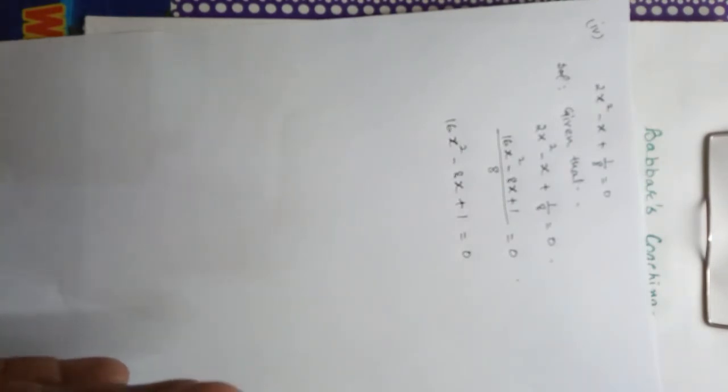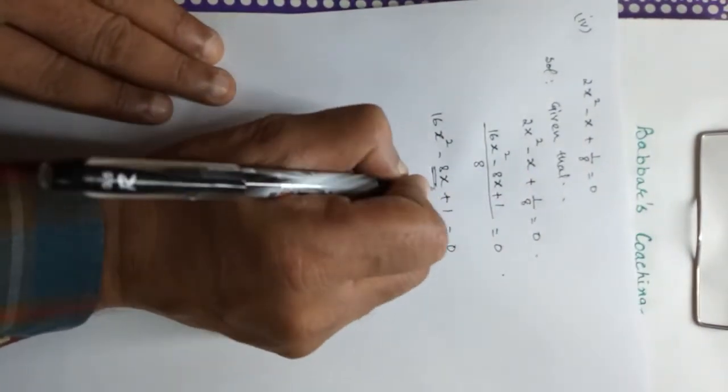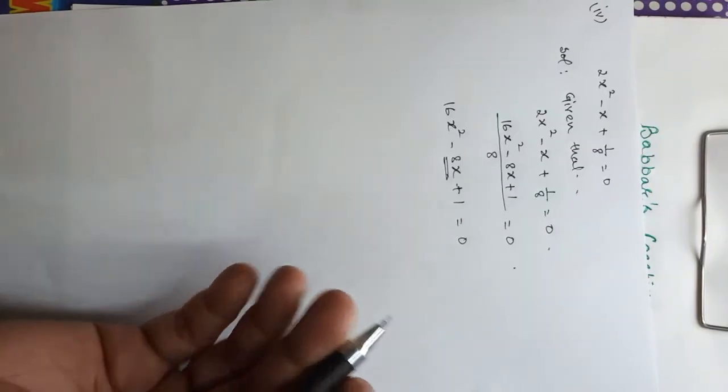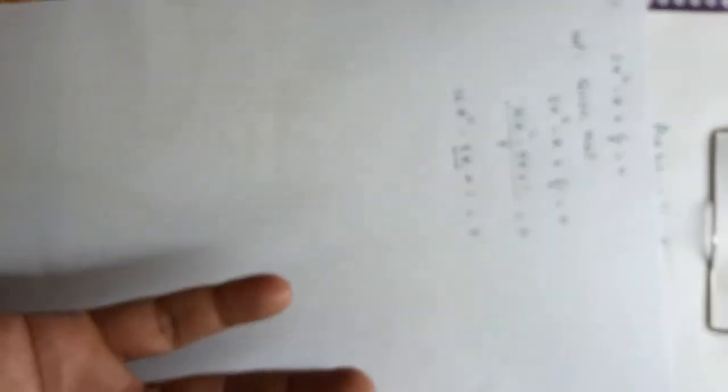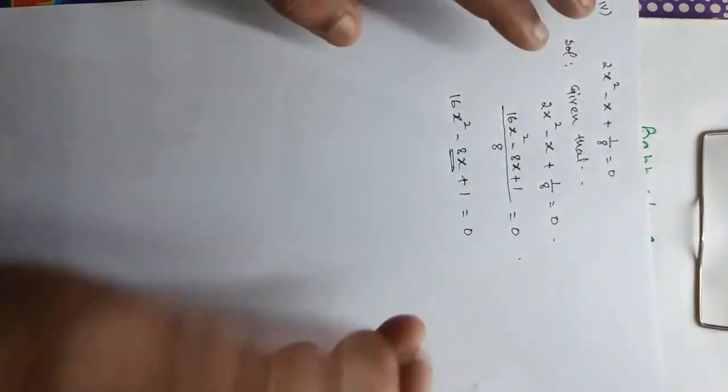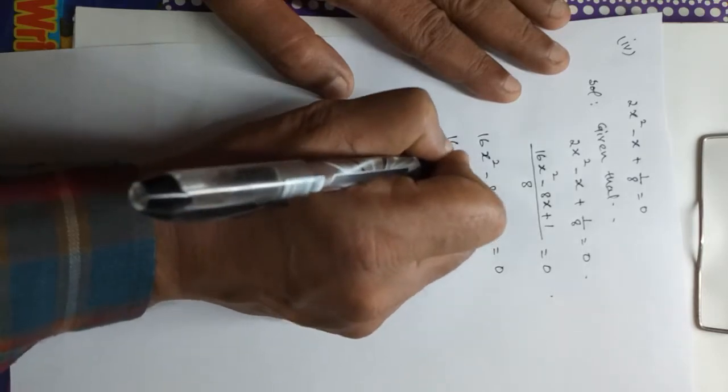We have a middle term factor. So we have a middle term minus 8x. So we will make this factor. So what is the factor? Which is multiplied by 1 into 16, which means that it should be multiplied by 16. And the total of both is equal to 8x.